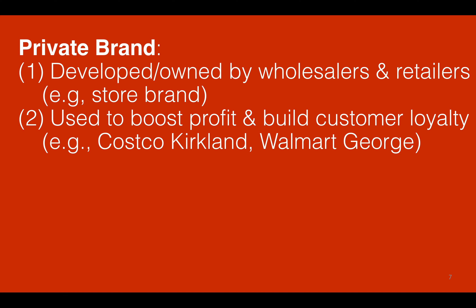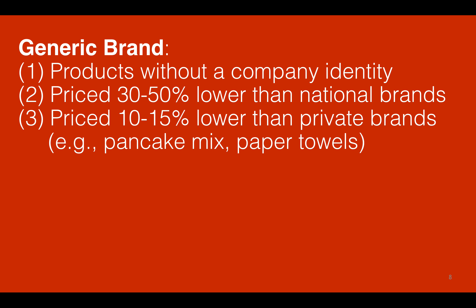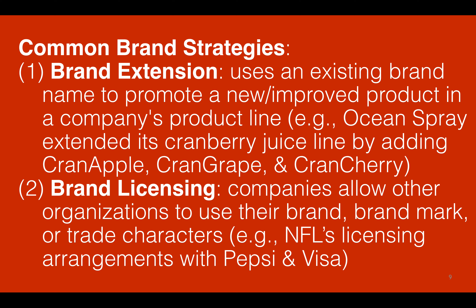Private brands are developed and owned by wholesalers and retailers — essentially in-store brands. They are used to boost profit and build customer loyalty. Examples include Costco's Kirkland or Walmart's George. Generic brands are products without a company identity. Their prices are typically 30 to 50 percent lower than national brands and 10 to 15 percent lower than private brands — for example, a generic pancake mix or paper towels.